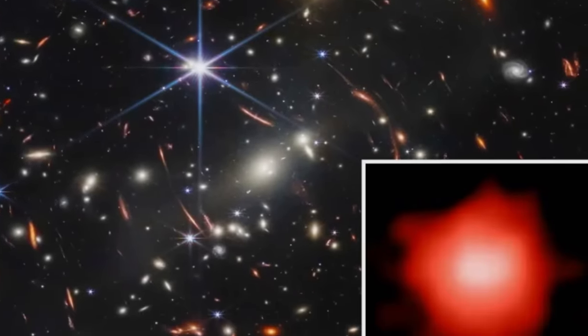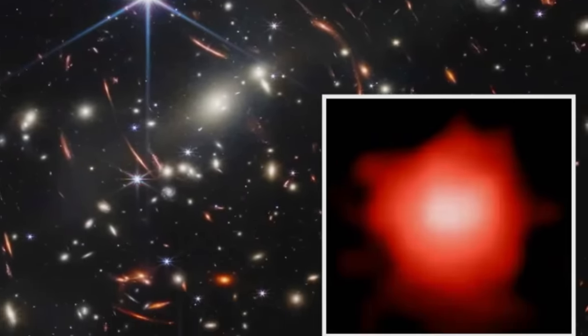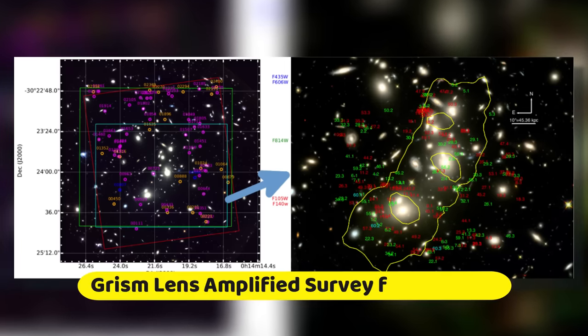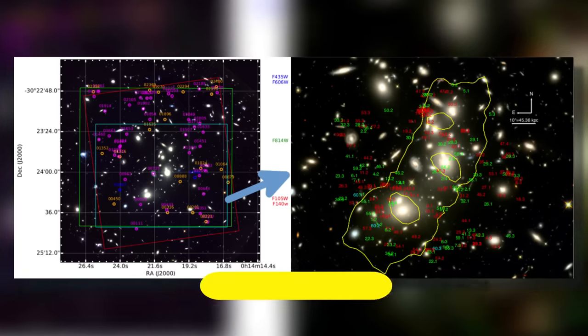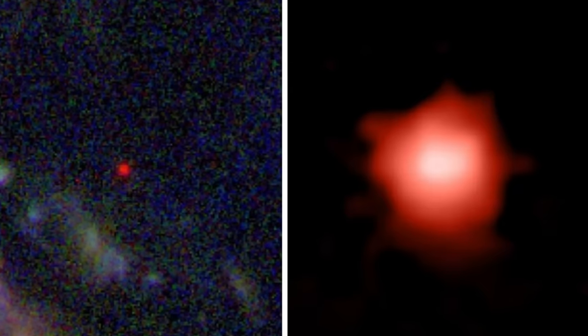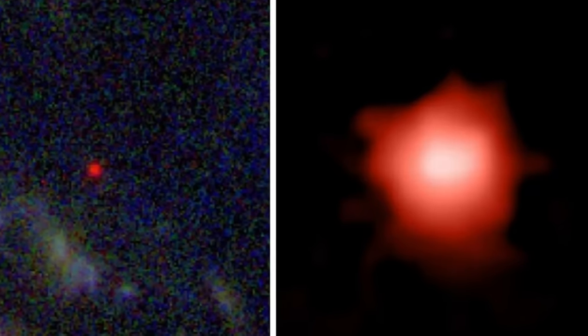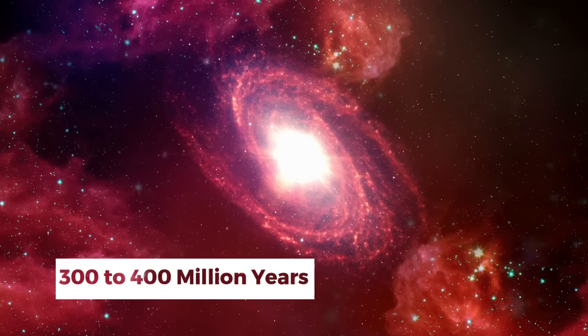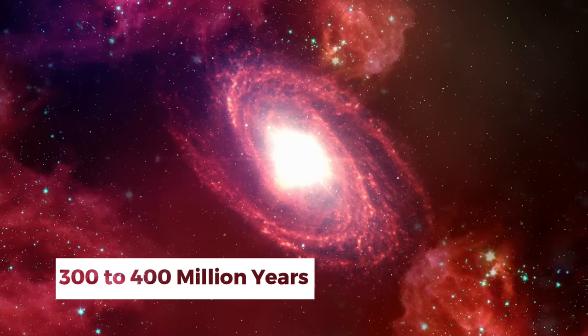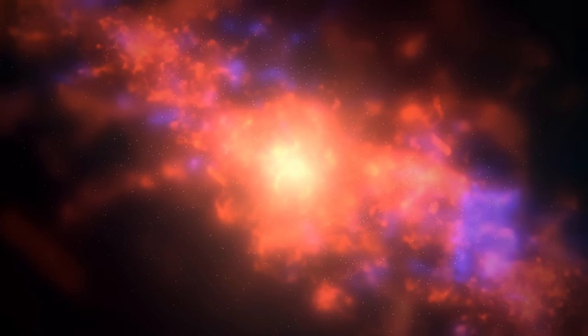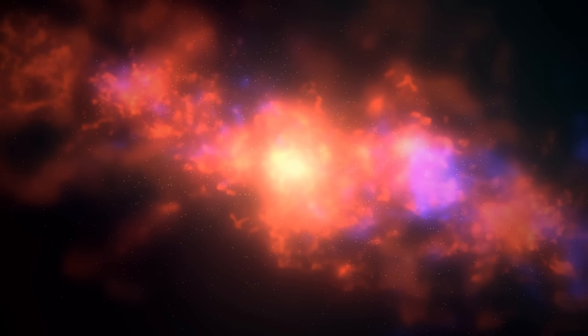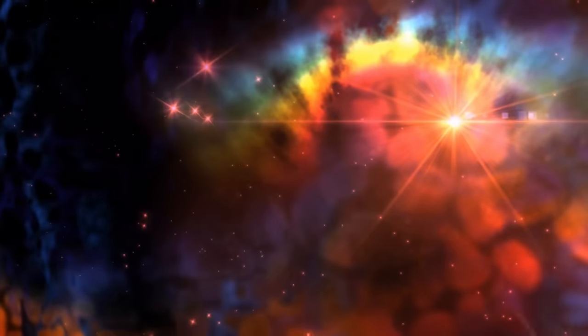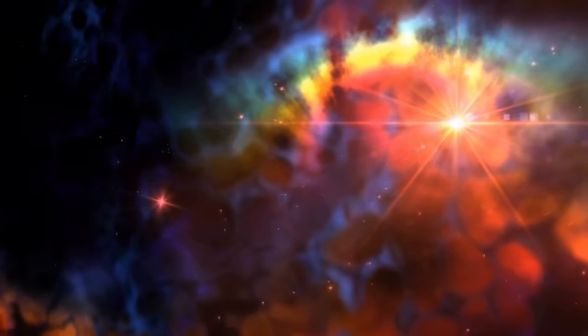Among the first newly discovered galaxies was GLASS Z12. In this context, GLASS Z12 stands for the Grism Lens Amplified Survey from Space, while Z12 signifies the value of the galaxy's redshift. This indicates that the universe came into existence just 300 to 400 million years following the Big Bang. The unveiling of GLASS Z12 generated a wave of enthusiasm among scientists, and it was soon followed by the discovery of even older and more mysterious galaxies.